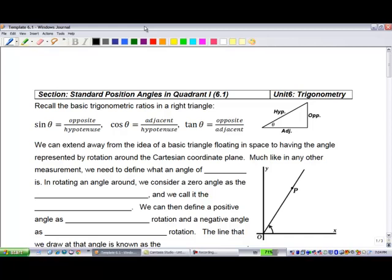If you think back to basic trigonometry, we know that sine theta is the ratio of opposite over hypotenuse, cosine is adjacent over hypotenuse, and tangent is opposite over adjacent. We often remember this with the acronym SOH CAH TOA.